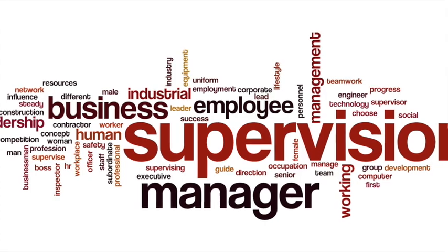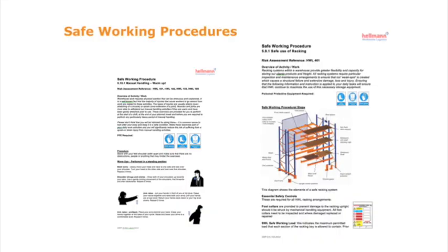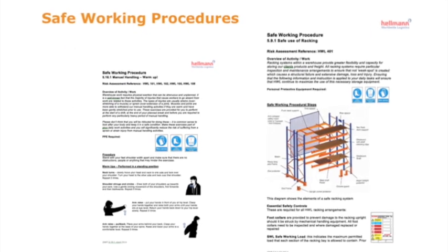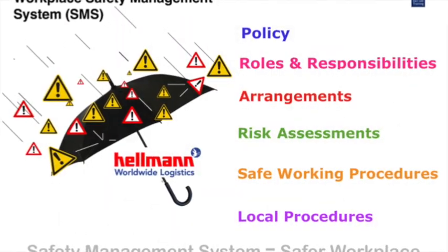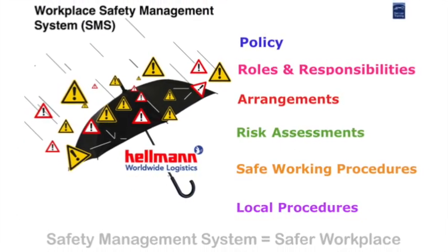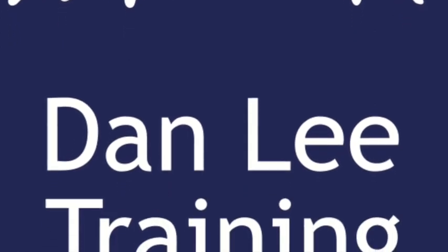Where your department or theatre of operation acquires new equipment or applies new procedures, speak to the safety team first to get assistance and guidance on determining the best risk controls and how to communicate and document them within the company's safety management system. Thanks again for watching. Next month, we'll look at local procedures.